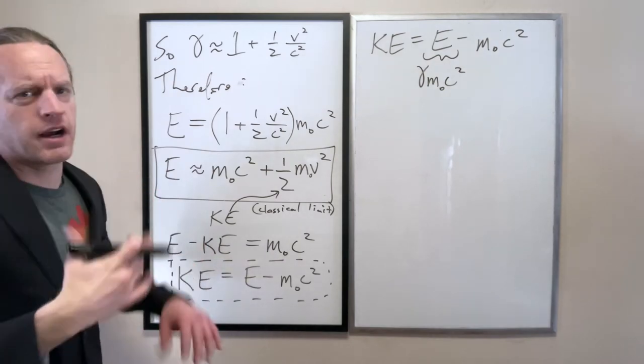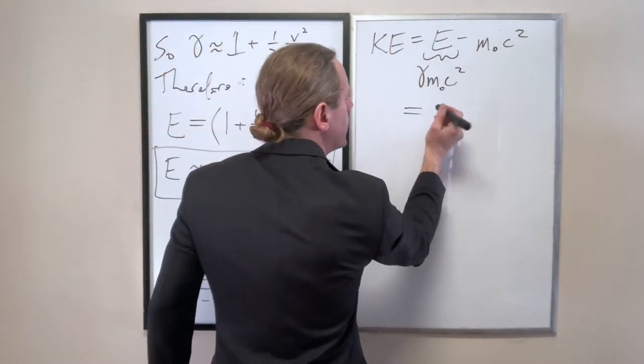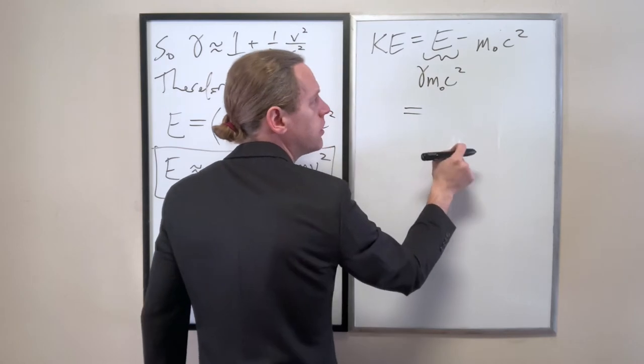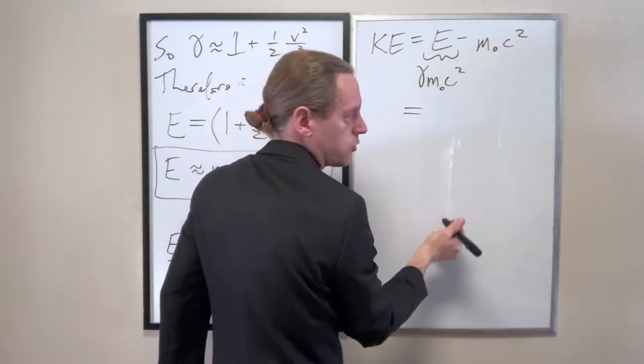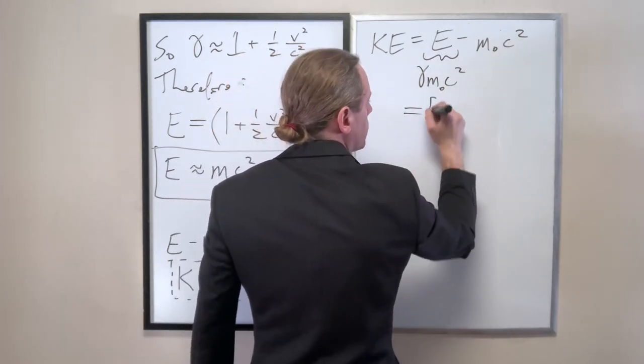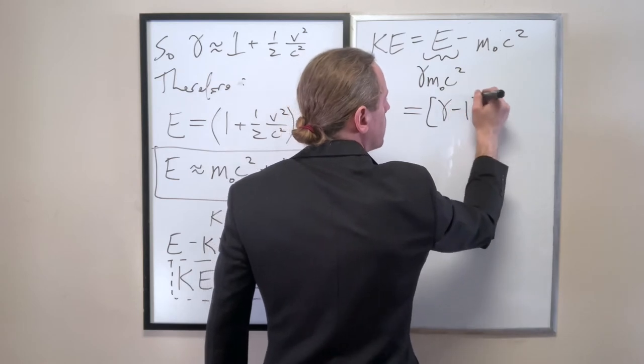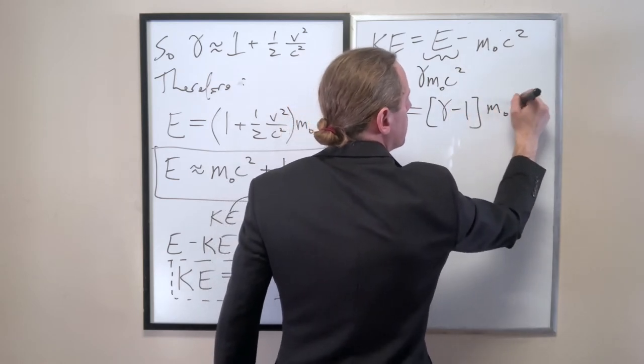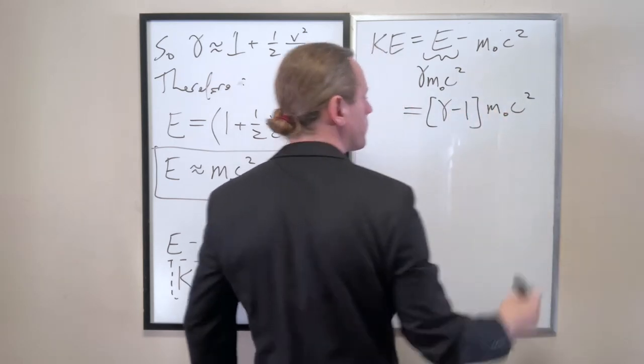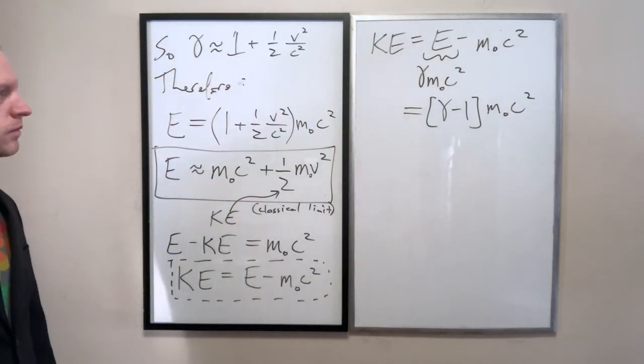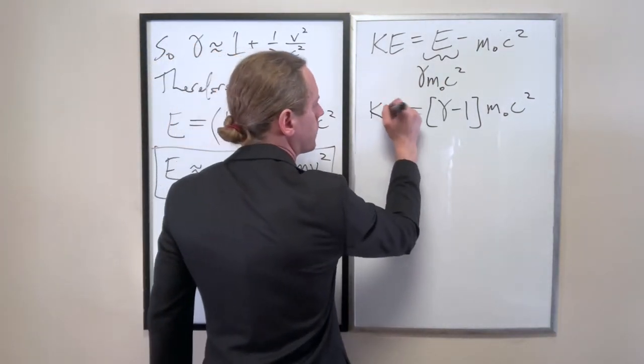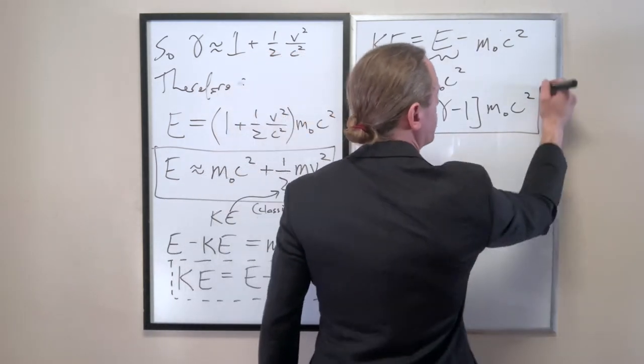So instead of replacing gamma with the 1 plus, you know, this right here, the Taylor expansion, I'm going to more properly write it as gamma M naught C squared. And now this is actually a kind of useful result here. That the kinetic energy is actually gamma M naught C squared minus M naught C squared. Or in other words gamma minus 1, M naught C squared. So I am going to kind of circle this here. I'm going to circle it with corners.